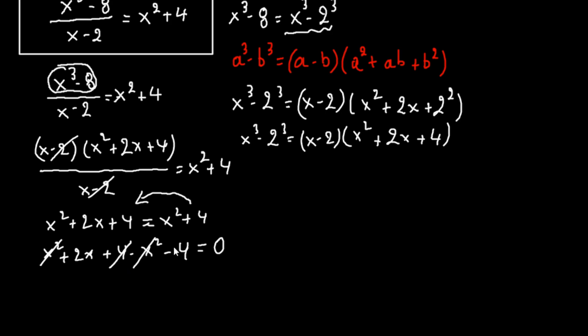So we have 2x equals 0, or finally x equals 0, which is our final solution.